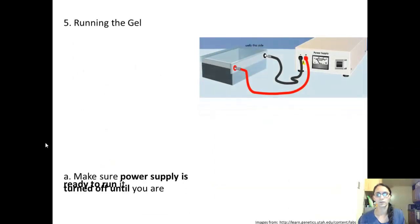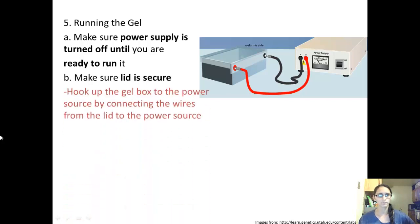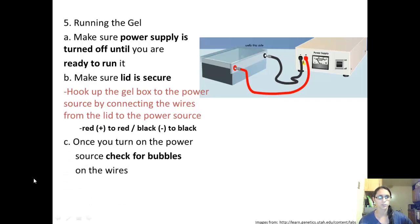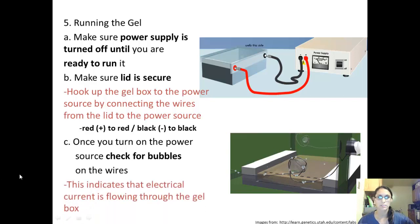Running the gel. Make sure that the power supply is turned off until you're ready to run it, and make sure the lid is secure. You want to hook the gel box here to the power source, which is here, by connecting the wires from the lid to the power source. Connect the red to the red and black to the black. Once you turn the power on, you can check for bubbles on the wires. You'll see these wires in here, and bubbles will be coming out of them. The bubbles indicate that there's an electrical current flowing through the gel box, so this is correct.